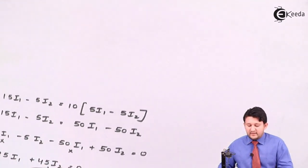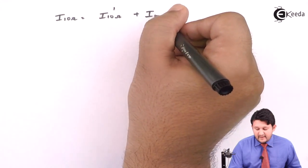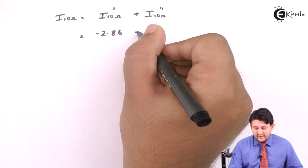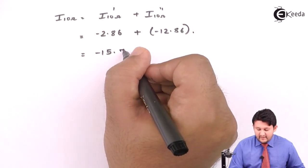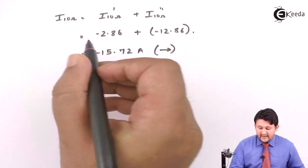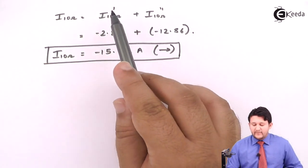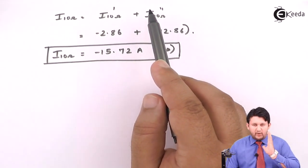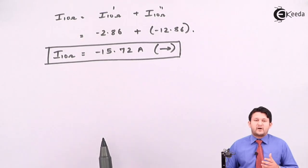Finally, applying superposition: the total current across 10Ω equals the sum of both cases. Case 1 gave −2.86A and Case 2 gave −12.86A. Both directions were right, so we add them: total current = −2.86 + (−12.86) = −15.72A, direction right. Always ensure both currents have the same direction before adding.